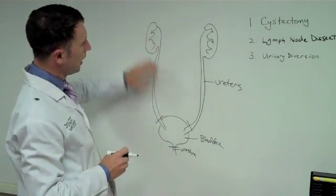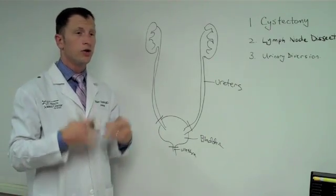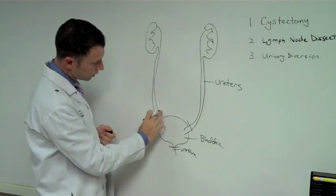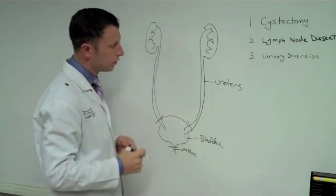Once that's removed, then we have to have a way of getting the urine outside the body or a urinary diversion. So we'll talk about that. The lymph nodes for the second part are really present here behind the bladder and then all throughout the pelvis. So those will be removed. It's the second step.